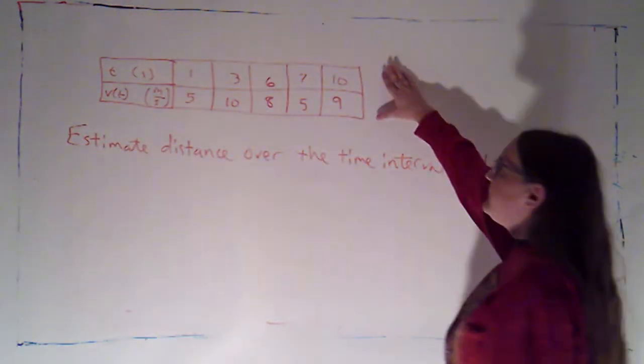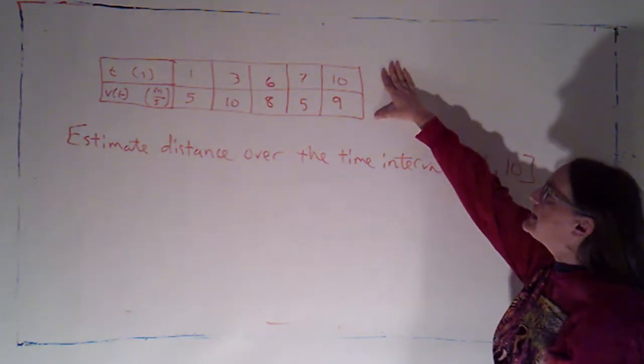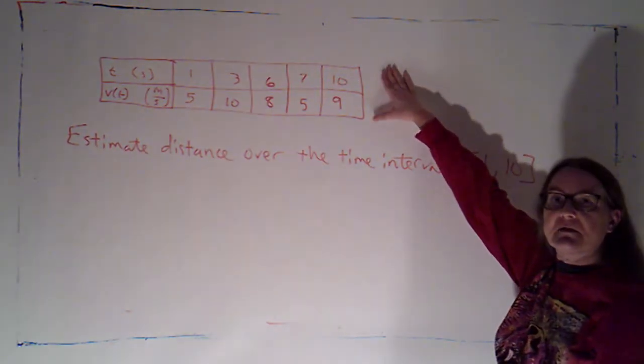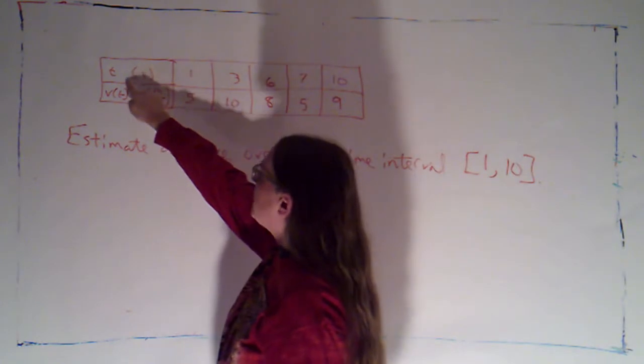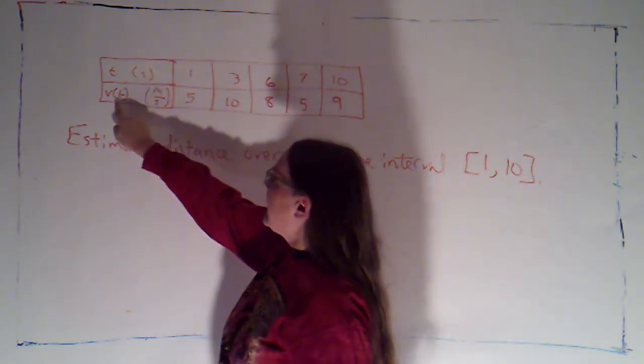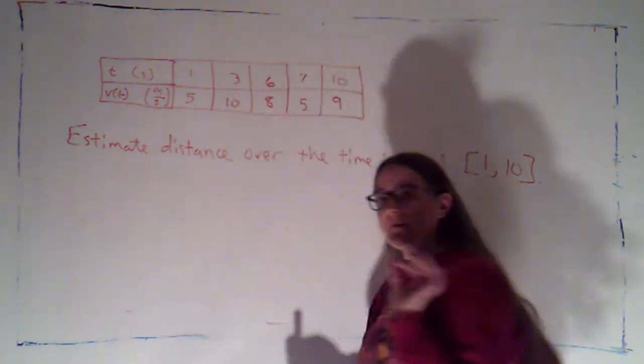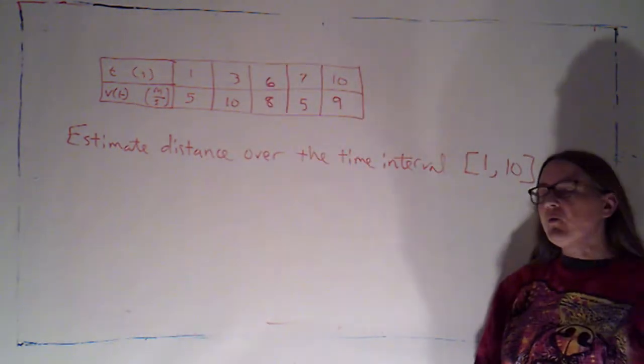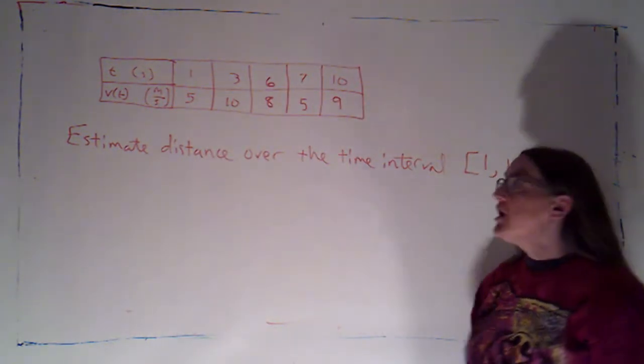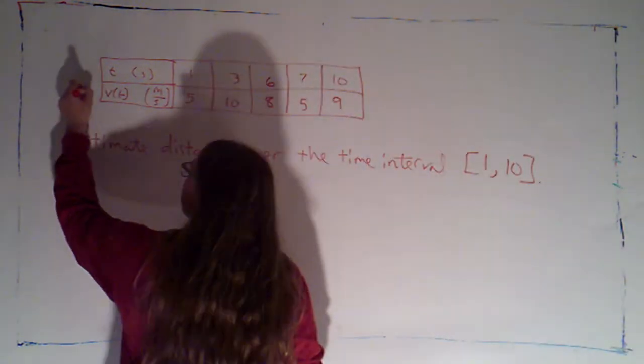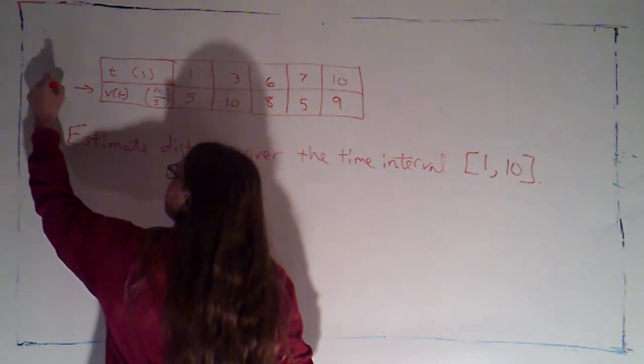Okay, I've got another problem up here. This time I didn't give you a formula for a function, instead I gave you a table of values. So I've given you time, which is in seconds, and velocity, which is in meters per second, and I'm telling you that this particle is always moving in the positive direction, so that for this problem, velocity is actually the same as speed.